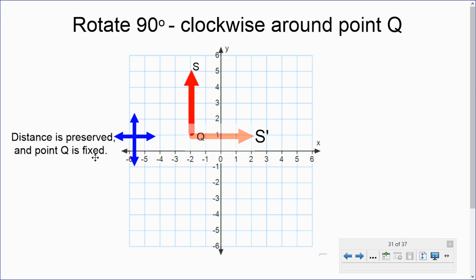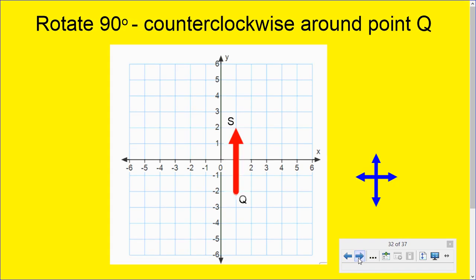But point Q is fixed. So that's a rotation around point Q. So here's one for you to try. See if you can rotate it 90 degrees counterclockwise around point Q. So remember, counterclockwise goes to the left. Check your distance of your vector, and then rotate it.